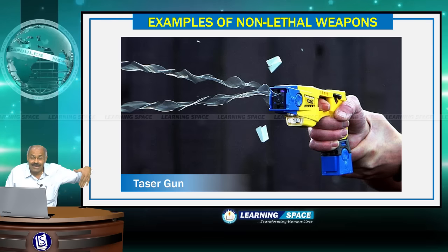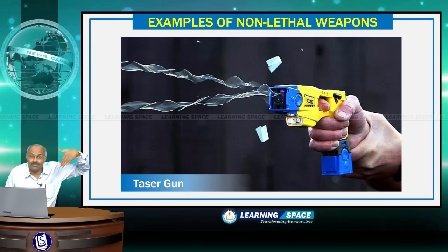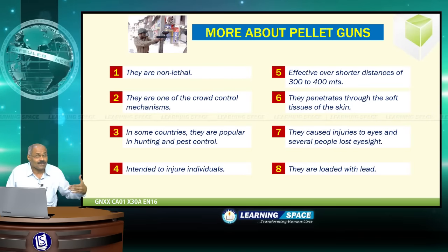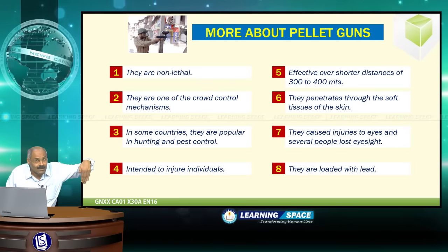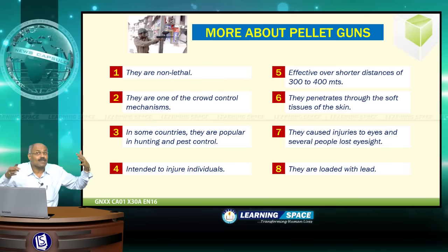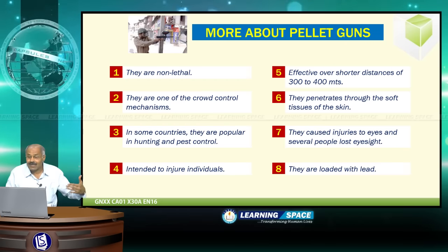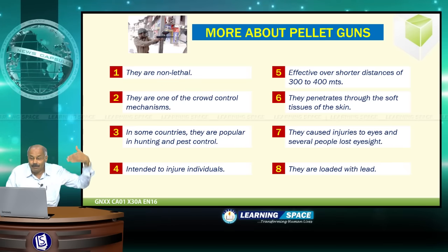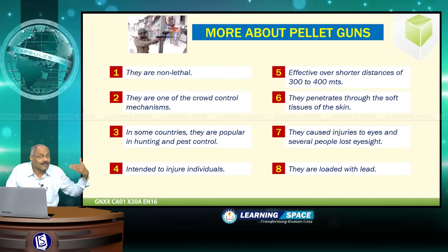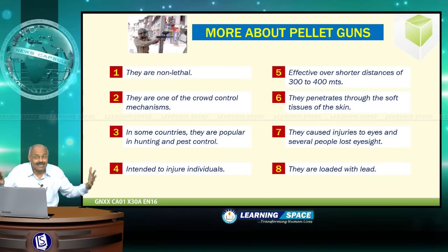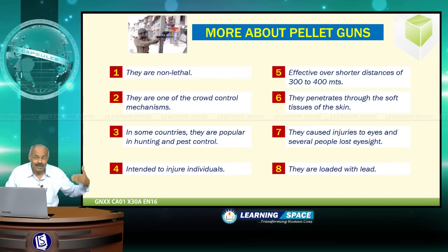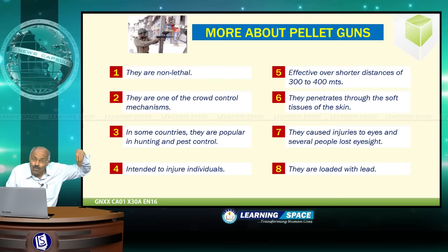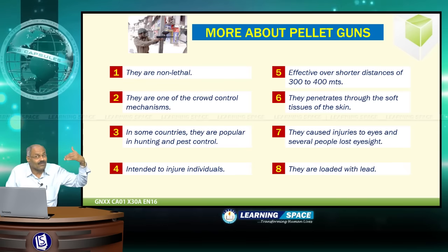After 2010, pellet guns came to the forefront. They come into the category of non-lethal and are one of the crowd control mechanisms. In some countries they are popular for hunting and pest control. Basically these are intended to injure individuals and do not result in death — only injuries will be caused. They are effective over shorter distances of 300 to 400 meters, less than 500 yards.